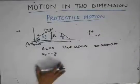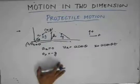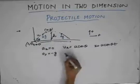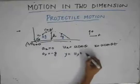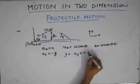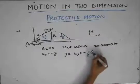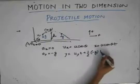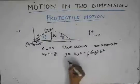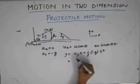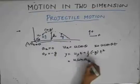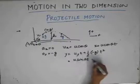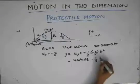Since the motion in the y-direction is uniformly accelerated motion, by our knowledge of kinematics in one dimension, we can write y as uy·t plus half times acceleration into t squared. The initial velocity in the y-direction is u sin theta, so y equals u sin theta · t minus half g t squared.